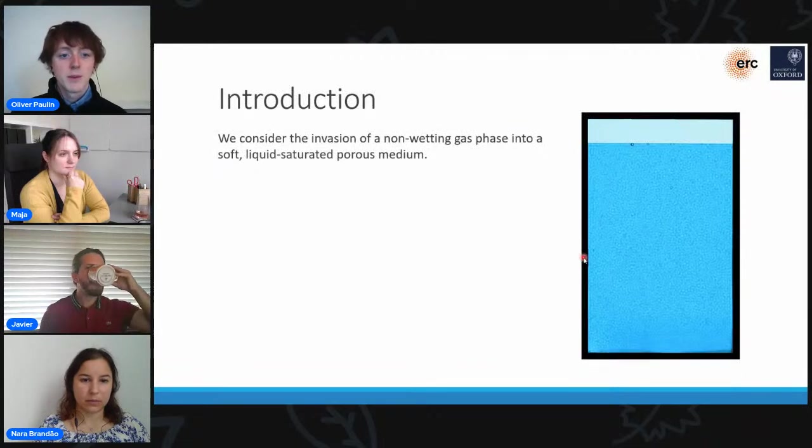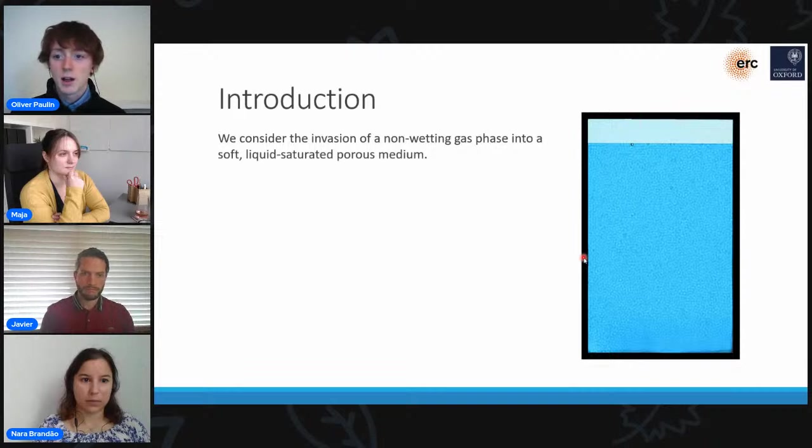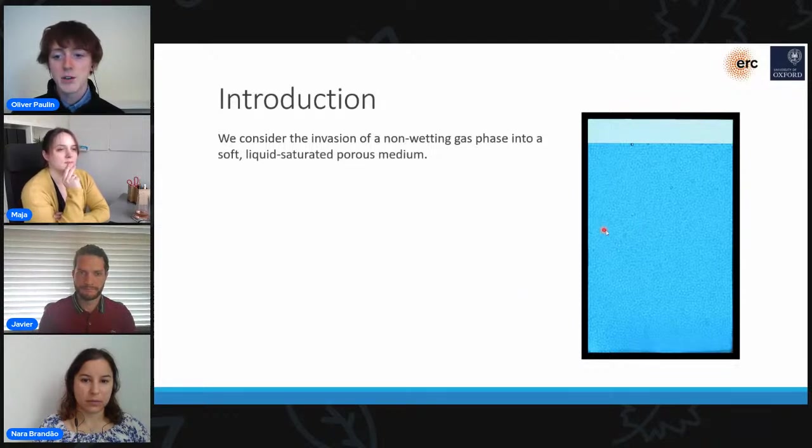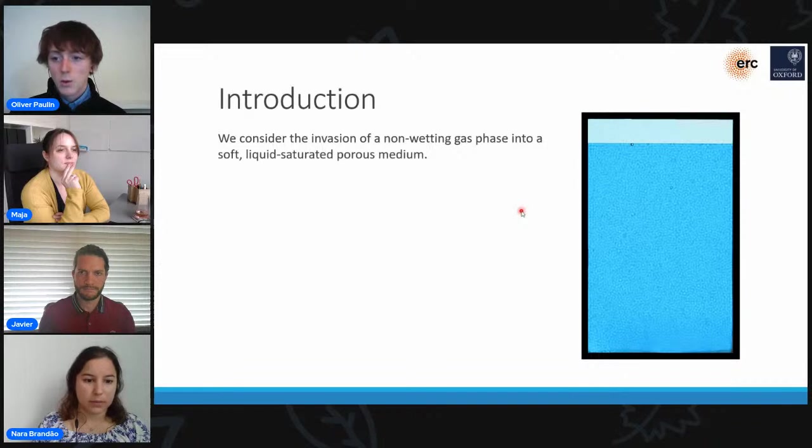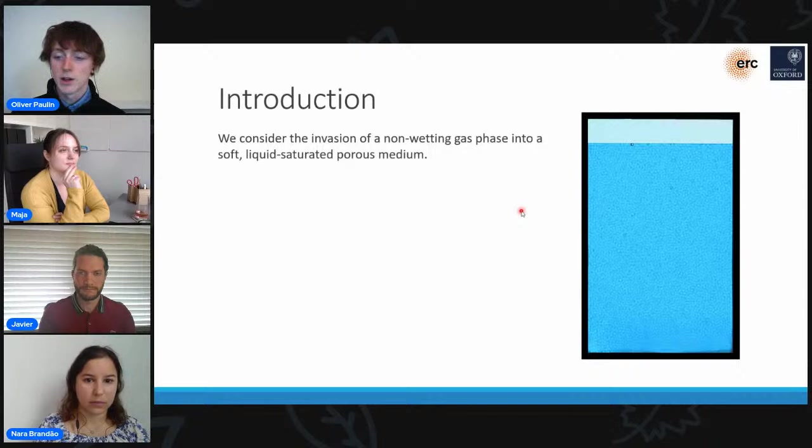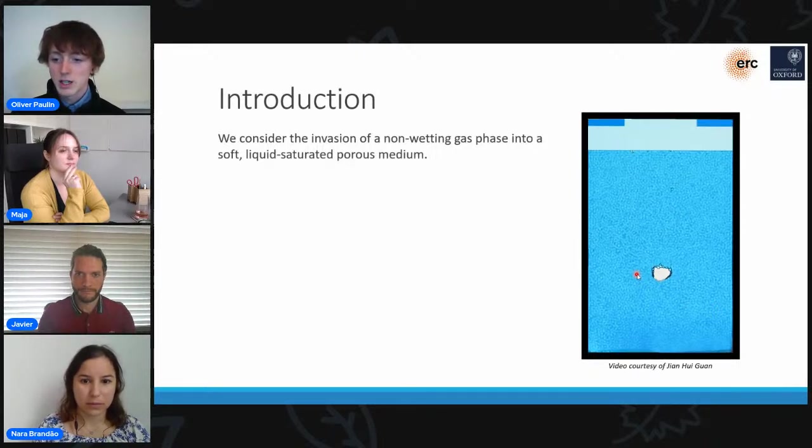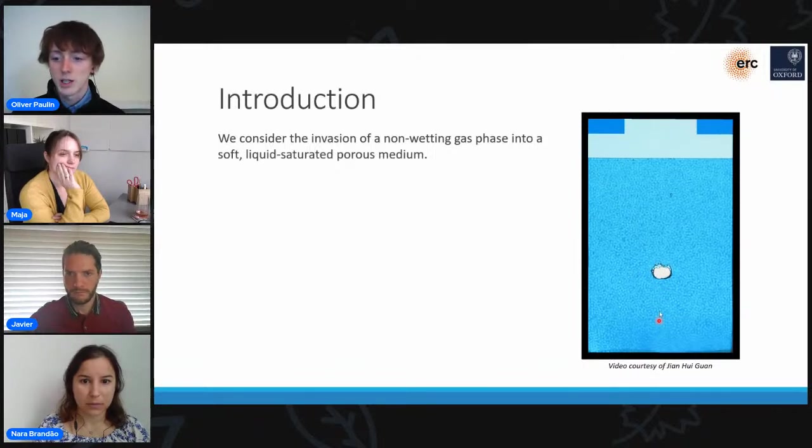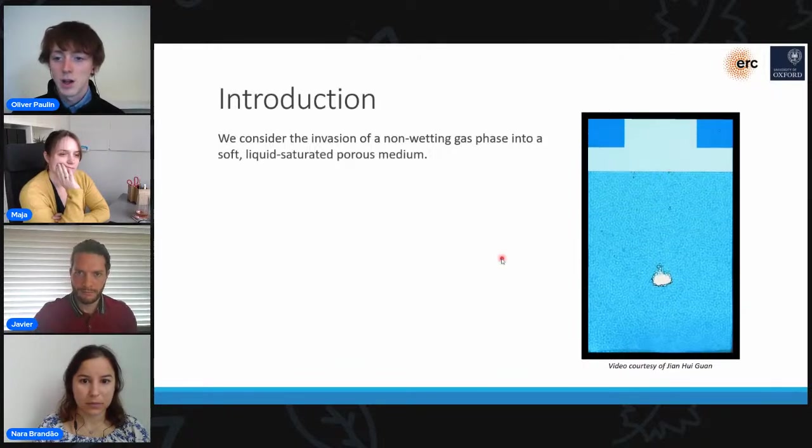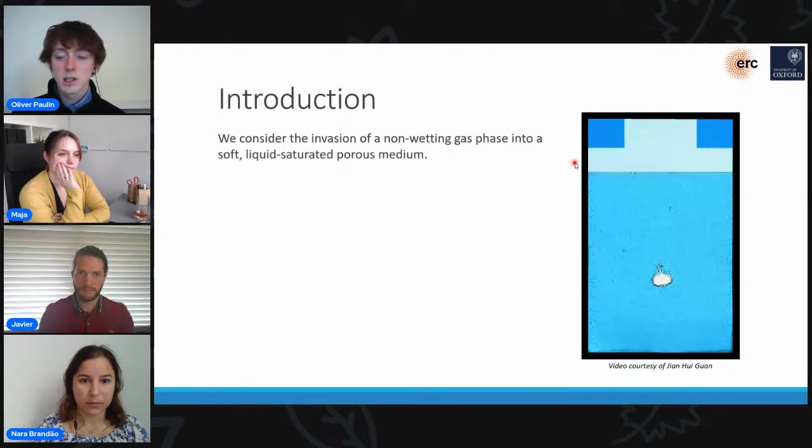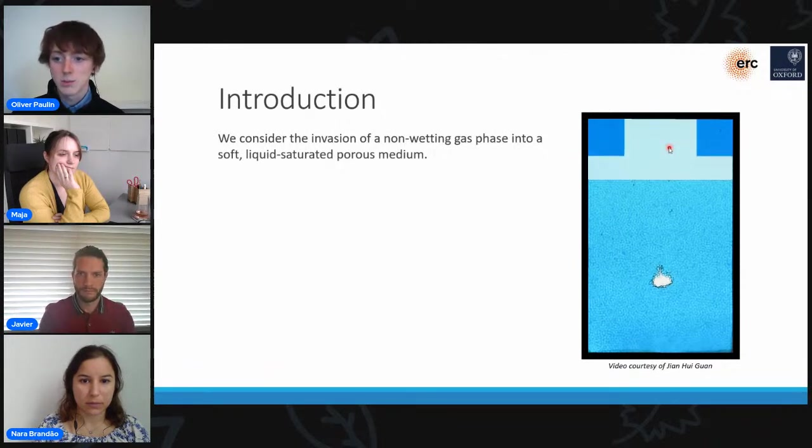So we can reproduce the behaviour that we see in nature experimentally by considering a quasi-2D flow cell, such as the one you can see on the right here, which we fill with a close packing of squishy hydrogel beads, and then saturate it with a liquid. What we then do is we inject a small amount of non-wetting gas into the base of the flow cell and see what happens. So what you see is that when the gas is injected, it forms an open cavity within the solid packing, which then rises upwards through the flow cell.